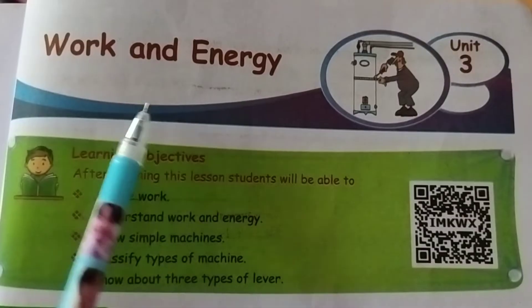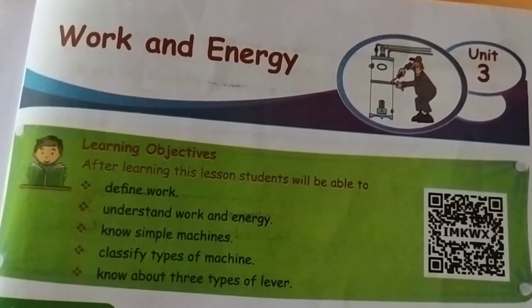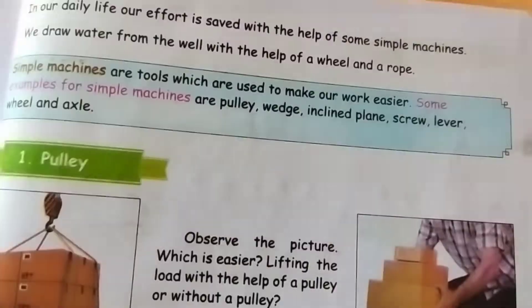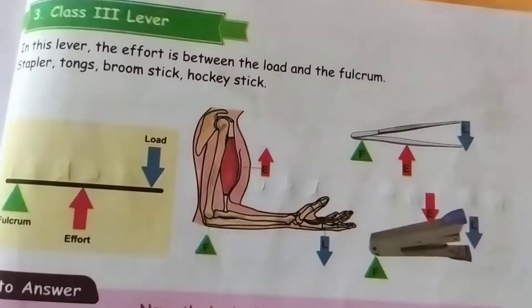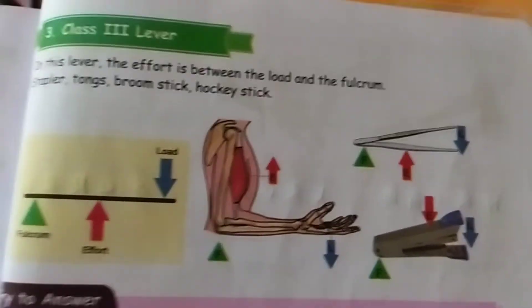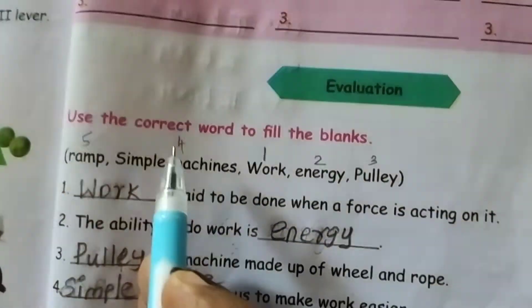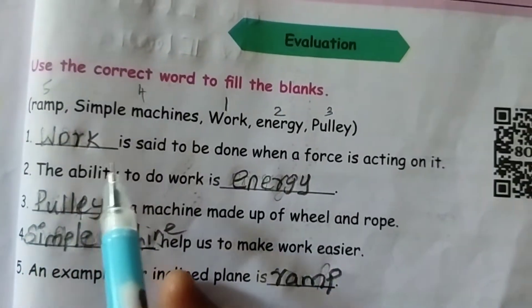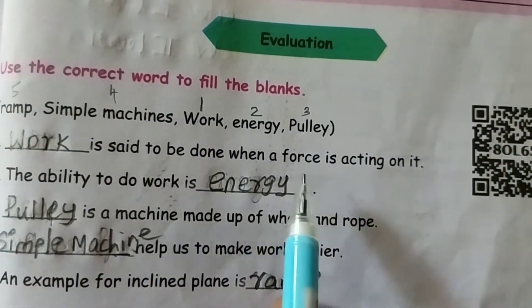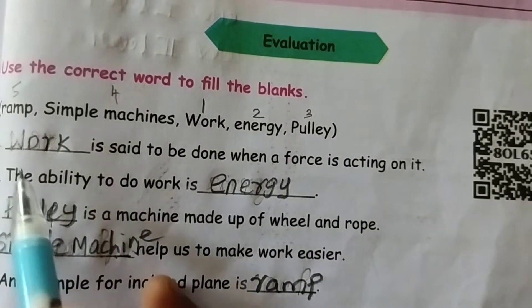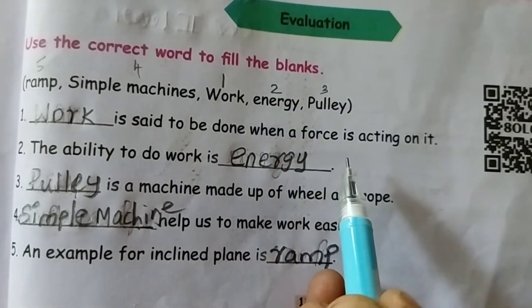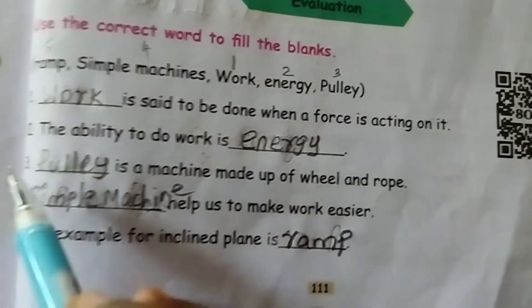Unit 3 Work and Energy, Book Pack Exercise, page number 111. First one: use the correct word to fill in the blanks. Work is said to be done when a force is acting on it.